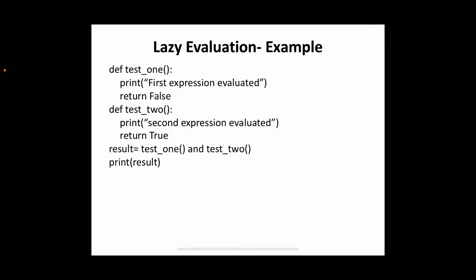Now what happens if we change the definition? In test1, the return value is false. test2 is the same, and the result uses the AND operation. By the definition of AND, if any one of the operands is false, the result is false. When it calls the first function, the result is false, then it can confirm that the result is false — no need of going for test2. Whatever may be the value of test2, the output is false. That means it can postpone the execution — the function invocation of test2 is not executed. That is also an example of lazy evaluation. The output is 'first expression evaluated' and the final result is false.